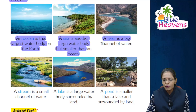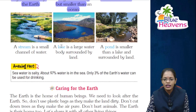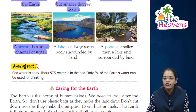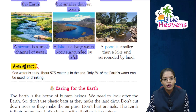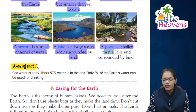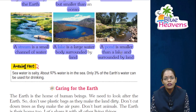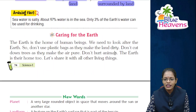A river is a big channel of water. A stream is a small channel of water — smaller than a river. A lake is a large water body surrounded by land. A pond is smaller than a lake and also surrounded by land.